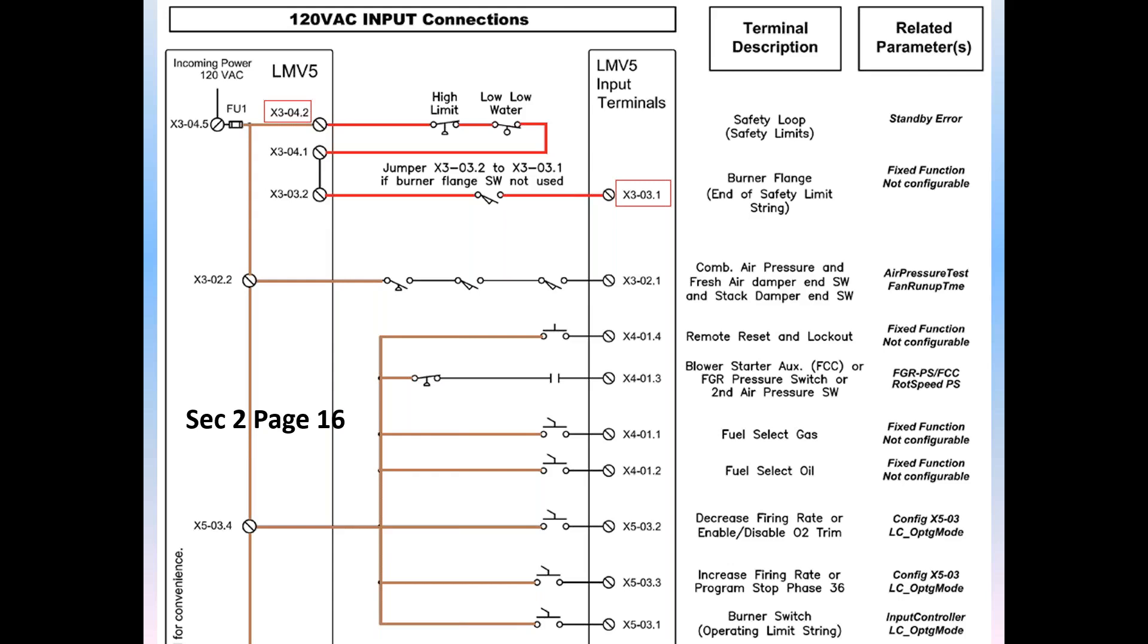In this slide I also like to point out the safety loop, shown above in red. It starts with X304.2 and finishes with X303.1. Items in this circuit are lockout non-recycled devices, such as high pressure, low low water, and in many cases of the European burners, a flange switch to prove that the burner is in fact engaged with the boiler.